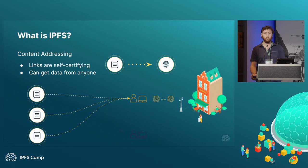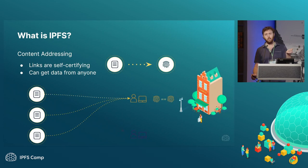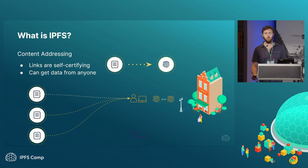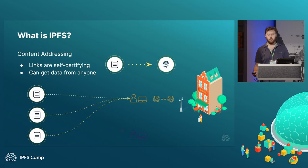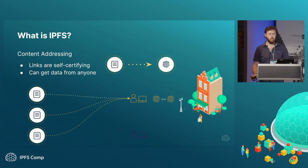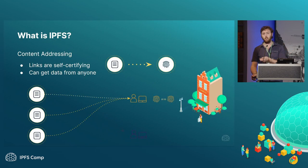When data is referred to by its custodian, only the custodian can assert that it is correct. You can't get the Google website from anybody else, because the only one qualified to tell you what the Google website is, is Google. Instead, we use this fingerprinting technique — hashing — to say the data is represented by this fingerprint. If you see the data, you compute a fingerprint, and if they match, you have found the thing.